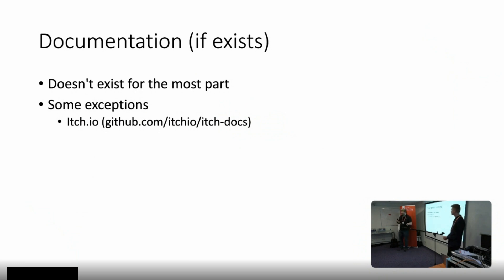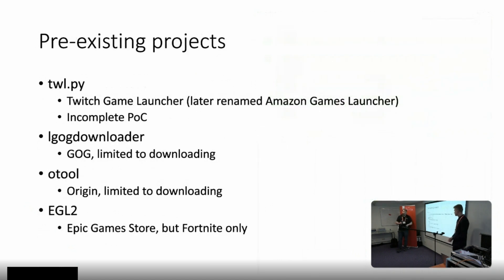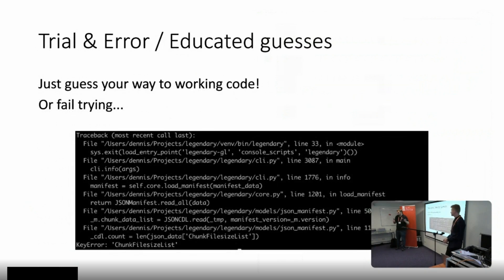So how did we do this? Documentation would be nice - it doesn't exist for the most part. Itch.io is pretty nice; they have a fully open source client and some documentation, but they are really the only ones. Reverse engineering, of course - network capture, doing a bit of binary analysis. Pro tip: if you check macOS binaries, they often have symbols. In the case of Epic stuff, that's pretty useful for figuring out how everything goes together, especially all the proprietary nonsense they do. There are also sometimes pre-existing projects: there was a Twitch API reference for the Amazon Games Launcher, LGOG Downloader, O-Tool for Origin (but it only downloads), and EGL2 for the Epic Games Launcher (but it only supports Fortnite). And then trial and error - just guess how things go together, sometimes it works, sometimes it doesn't.